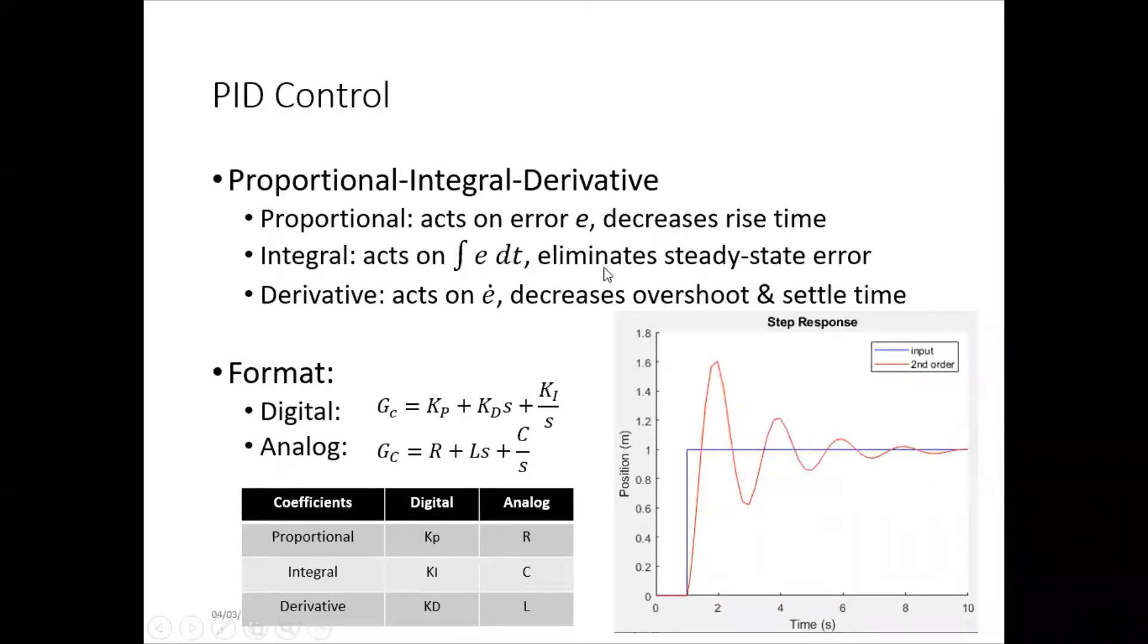So, since the proportional term acts on the error, decreasing the rise time, then the farther away the actual system is from the desired, the harder it will try to pull the system. So, this part right here is rise time. So, with a high KP, there is less difference between start of signal and time that the system reaches it. With a low KP, this would be a little bit stretched out.